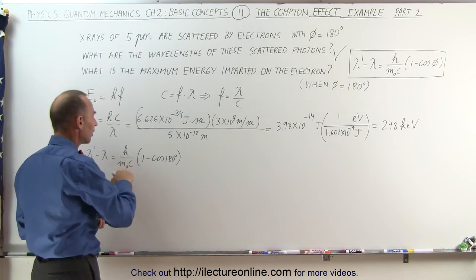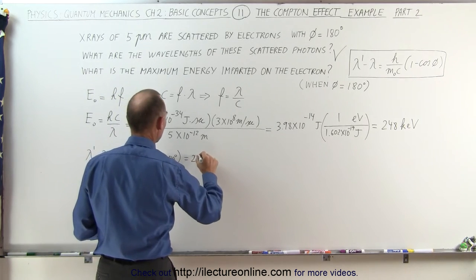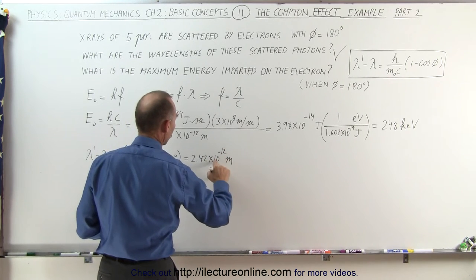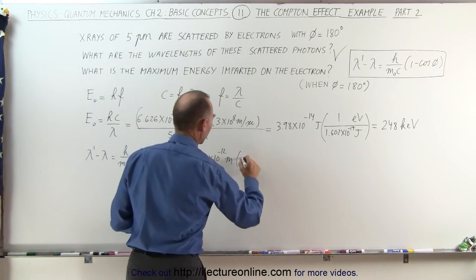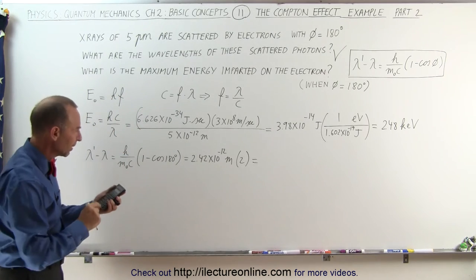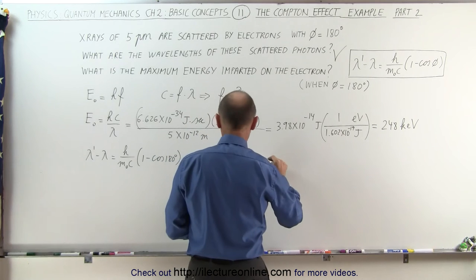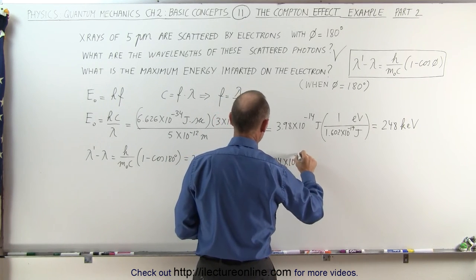Now from previous calculations we know that this quantity right here is equal to 2.42 times 10 to the minus 12 meters, about 2.42 picometers. And then we multiply this times 2 because 1 minus the cosine of 180 degrees equals 2, so times 2. That would be 4.84 times 10 to the minus 12 meters.